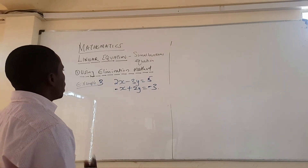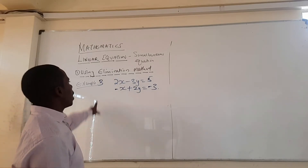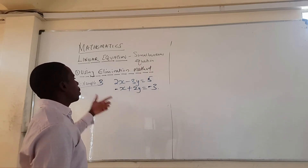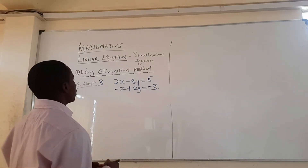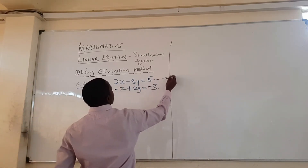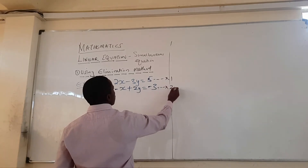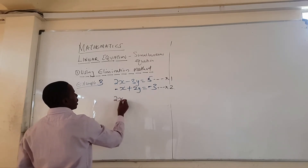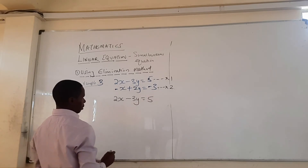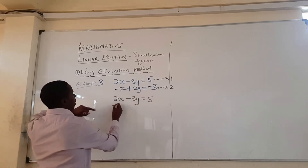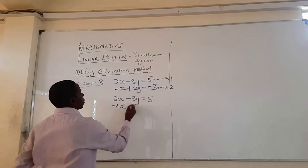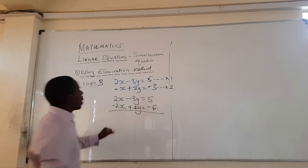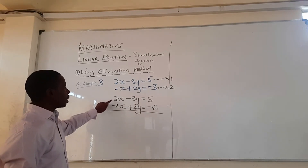We can go for x. We have 2x in equation 1 and 1x in equation 2. We need to make them equal. So we multiply equation 1 by 1 — it stays unchanged — and multiply equation 2 by 2 everything. This gives: 2x minus 3y equals 5, and 2 times minus x gives minus 2x, 2 times 2y gives plus 4y, and 2 times minus 3 gives minus 6. So we have 2x and minus 2x.